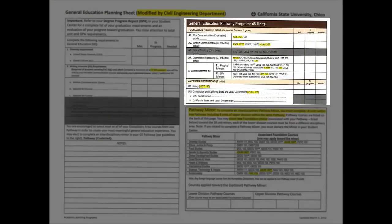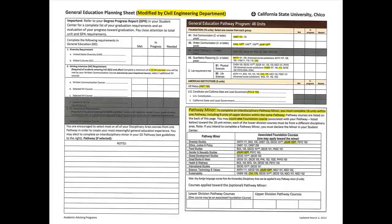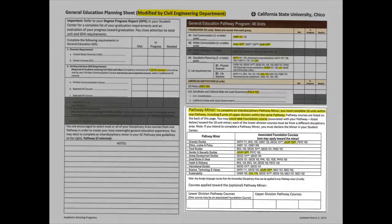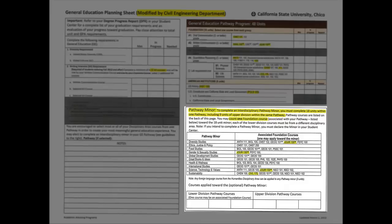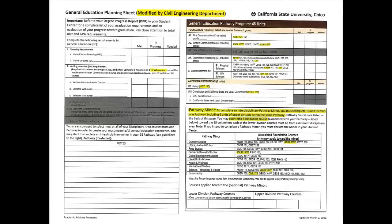The right-hand side of the first page, if you look at the top right, includes some of the other general requirements for oral communication, written communication, and so on. These requirements are also already included in the course requirement Excel file we talked about in the first video. The bottom right of this first page discusses the requirements for a pathway minor, and I'll talk to you about a pathway minor in a minute.